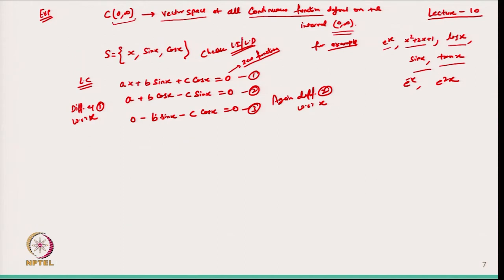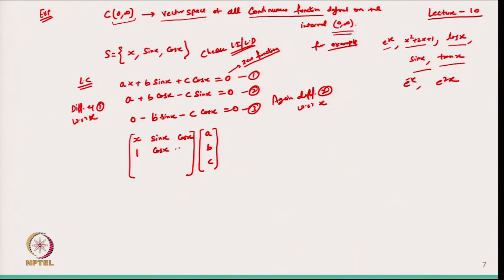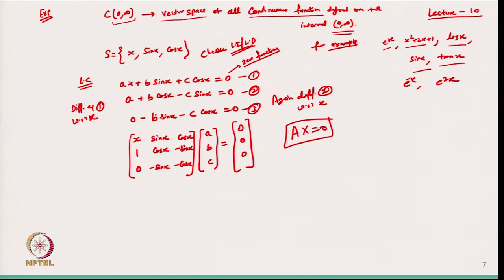Functions which are differentiable are also members of this space, since a differentiable function is necessarily continuous. From here I write this into the form of a matrix. The system becomes: [x, sin x, cos x; 1, cos x, −sin x; 0, −sin x, −cos x] times [a, b, c]ᵀ = 0. I need to find the determinant of this coefficient matrix A.